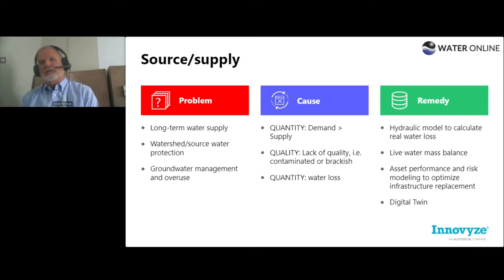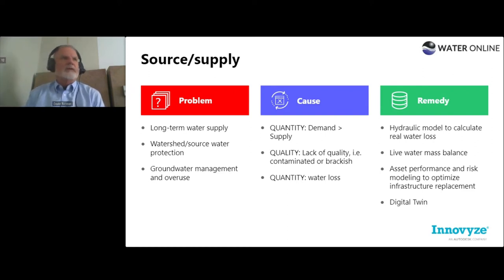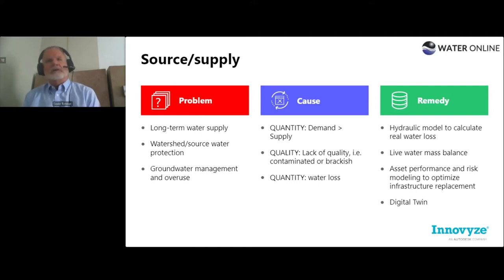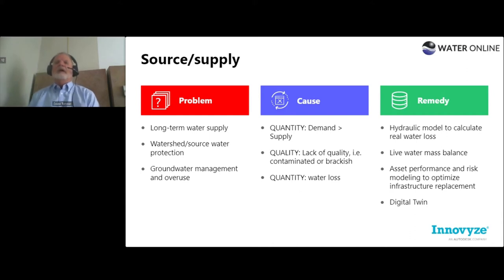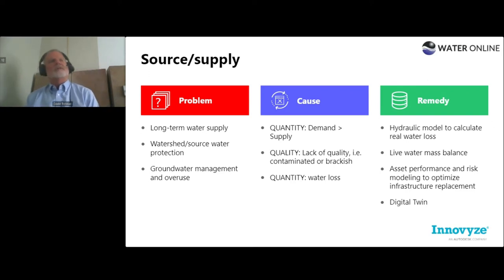From a remedy perspective, we are firm believers — coming from a long line of hydraulic and hydrologic modeling — that you need a hydraulic model to calculate real water loss. That takes the water model into more of an operational perspective. There's apparent loss, but we're talking about real physical loss. The key to saving water is to not lose it: for every treated gallon of water, you want to make sure it gets to the customer.